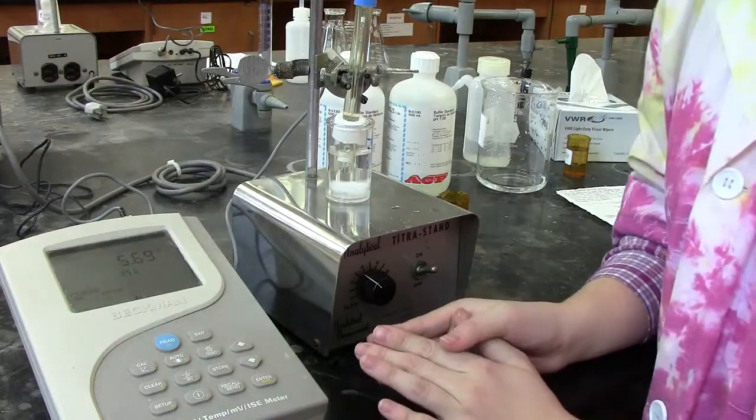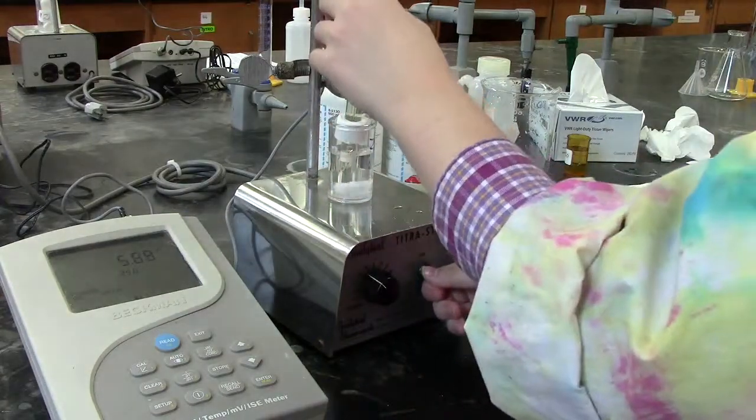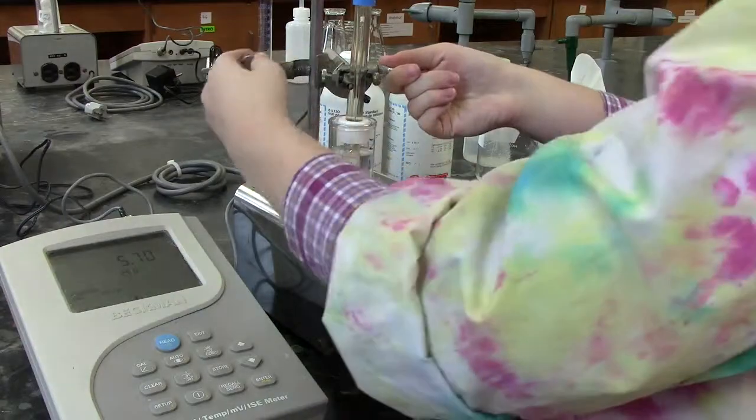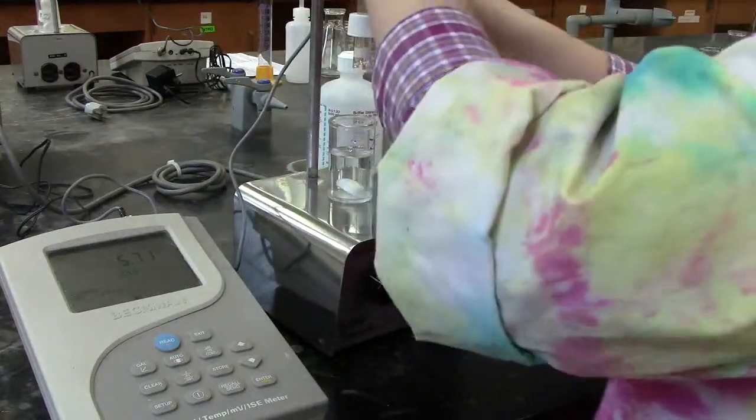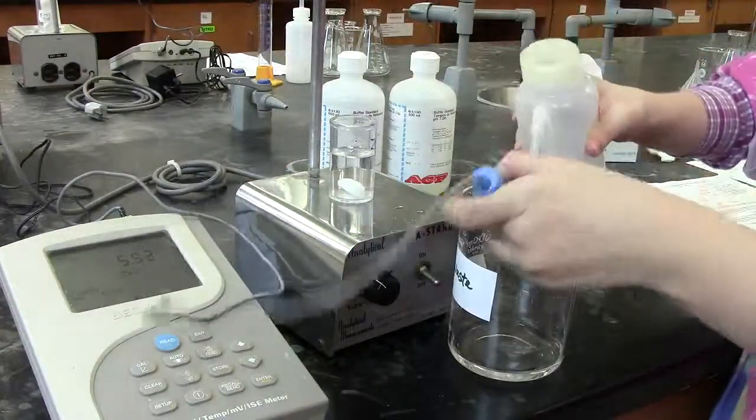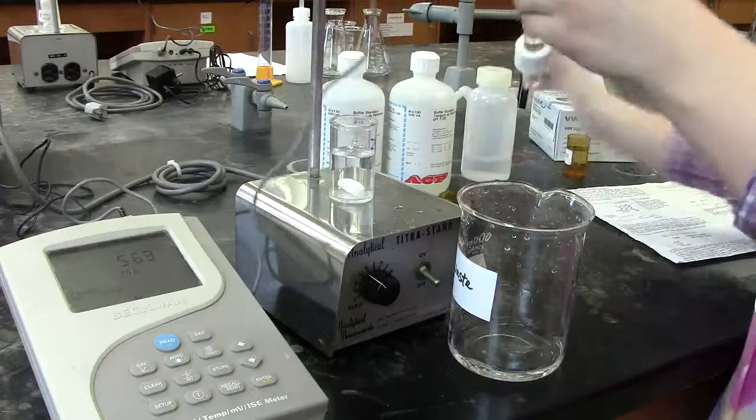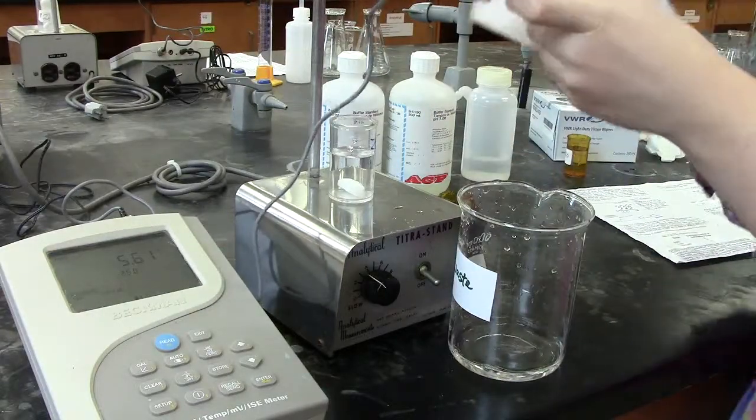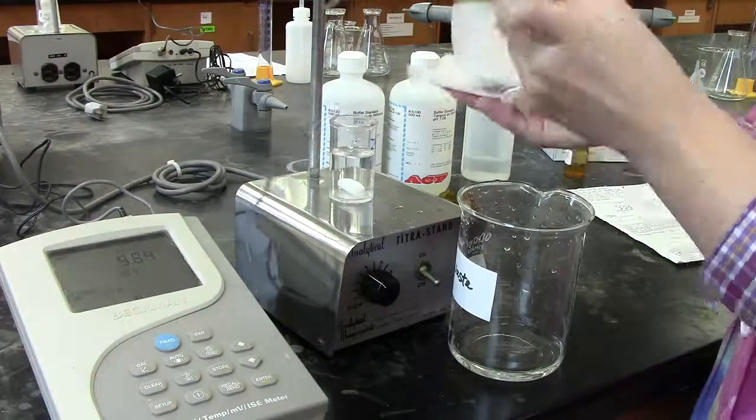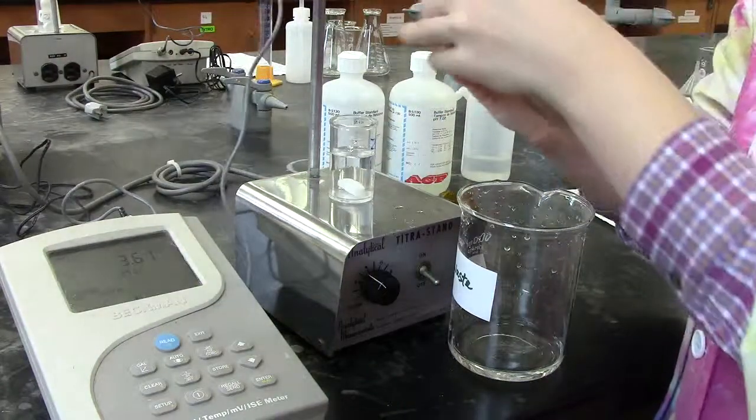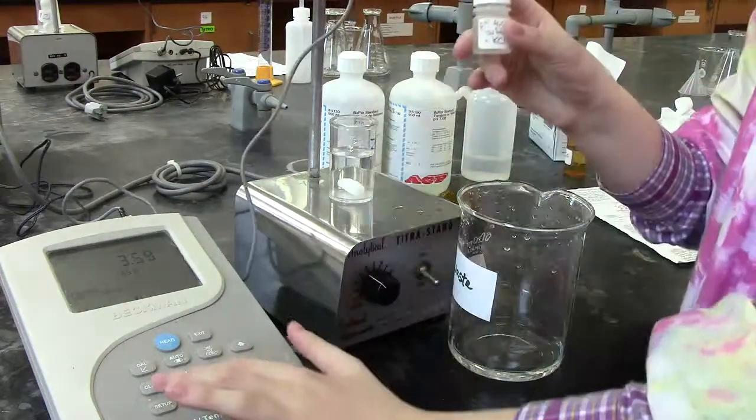Once I've recorded all my pHs, I remove my electrode from the unknown solution, rinse the electrode, and return it to the storage buffer. At this point, I can now turn the pH meter off.